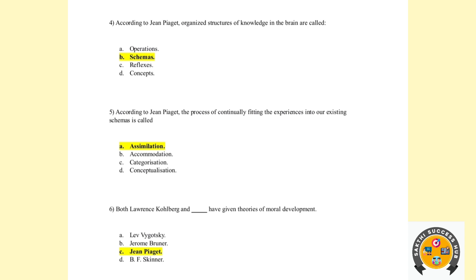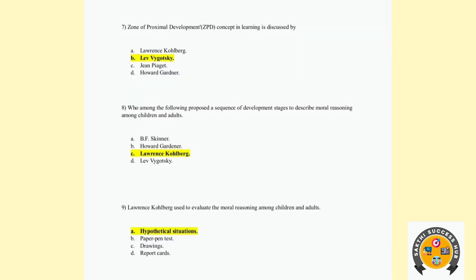Seventh question: The Zone of Proximal Development concept in learning is discussed by whom? Zone of Proximal Development involves scaffolding and a more knowledgeable person. Eighth question: Who among the following proposed a sequence of developing stages to describe moral reasoning among children and adults? Moral reasoning is Kohlberg — Kohlberg's Moral Developmental Theory.